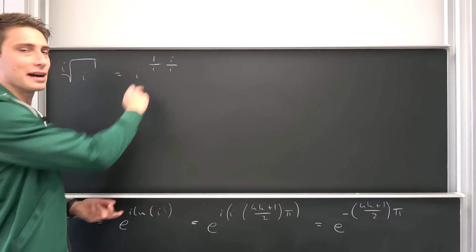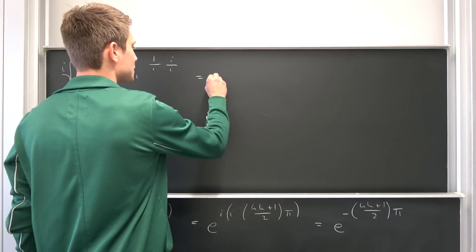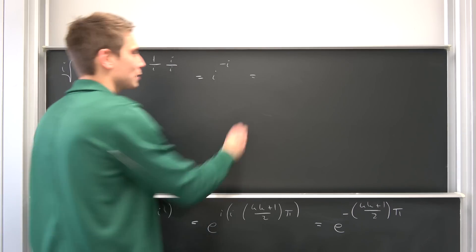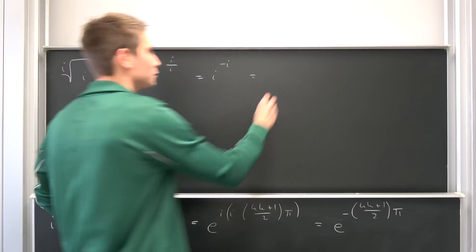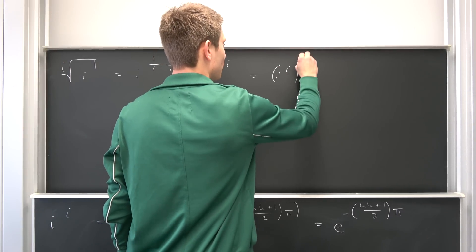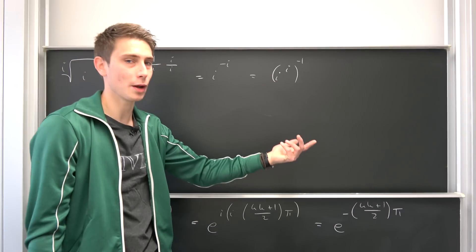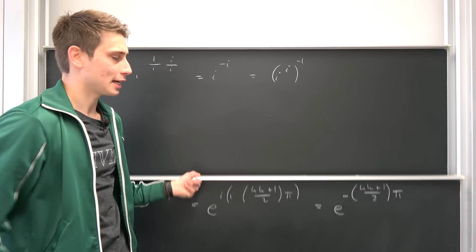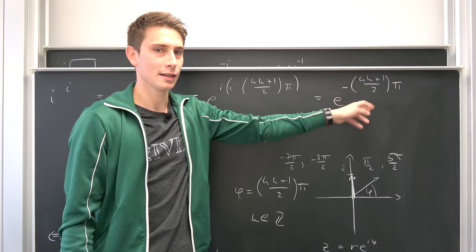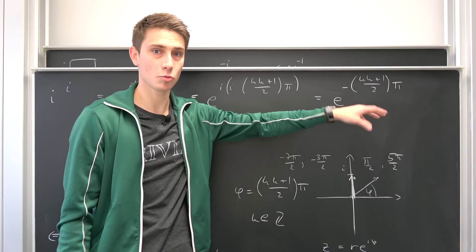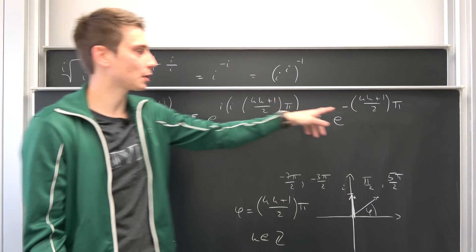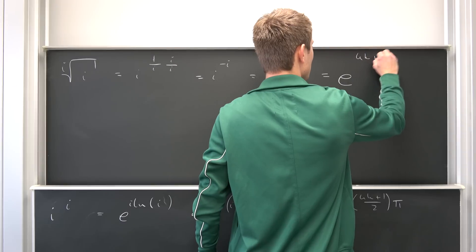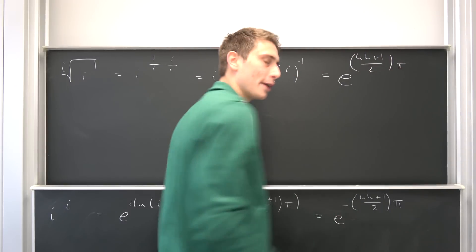And well, i times i is going to be negative 1, so overall this is i to the negative i power. Another cool power property is that we can bring this negative 1 as a new power to the front, you could say, so factoring out this power. So we get i to the i power to the negative 1 power. It does work, this makes it multiplicative writing it like this. And well, i to the i power we have evaluated this, so we get this expression right here, but just with a sign turned around because we are going to multiply it by negative 1. So overall this is going to be e to the 4k plus 1 over 2 times pi, and then we are done.